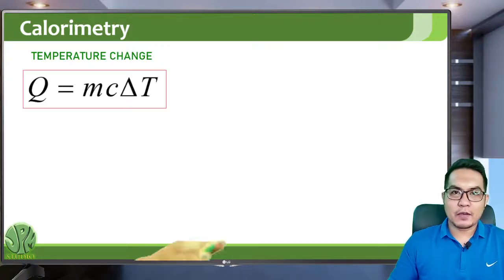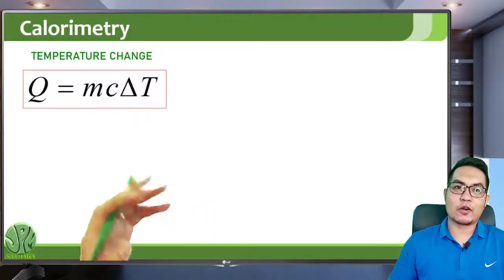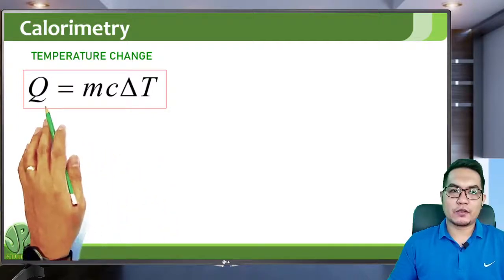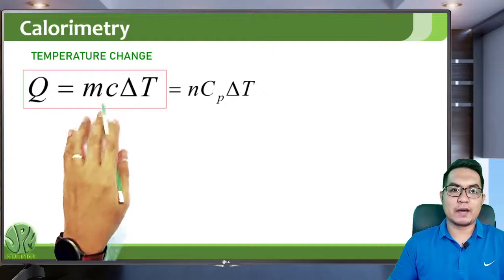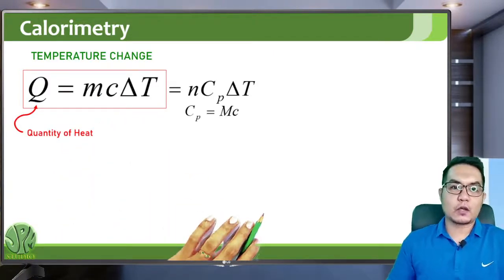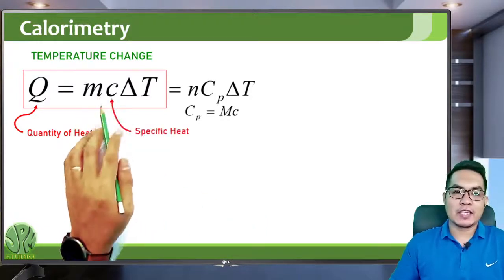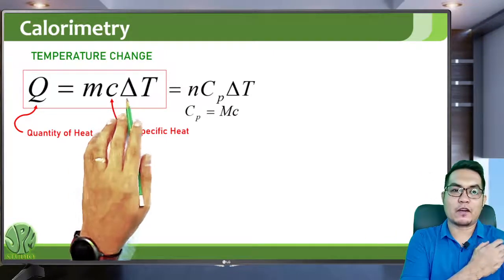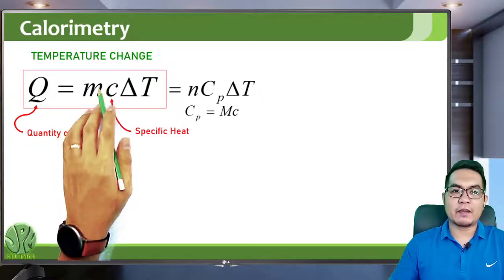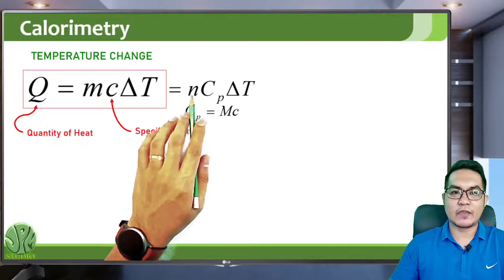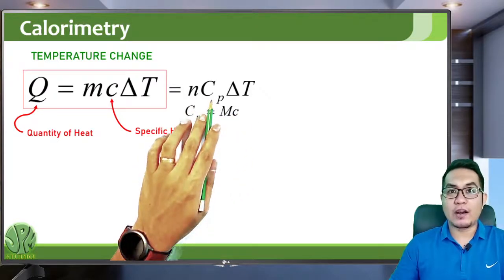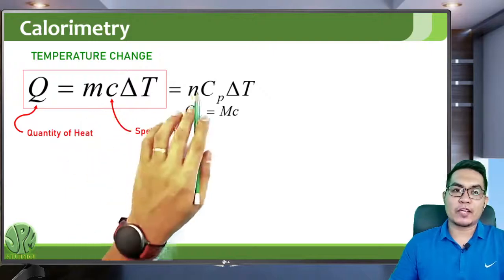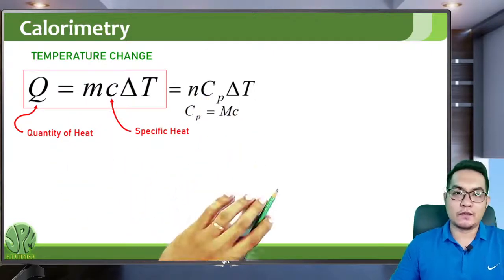If you add heat and that causes the material to change temperature, the amount of heat needed Q is given by Q = mcΔT. Q is the quantity of heat, m is the mass of the material, c is the specific heat — a constant similar to the coefficients of expansion — and ΔT is the change in temperature. If you are given the number of moles instead of mass, you can write this as Q = ncpΔT, where cp is the molar heat capacity.